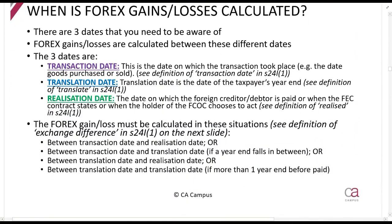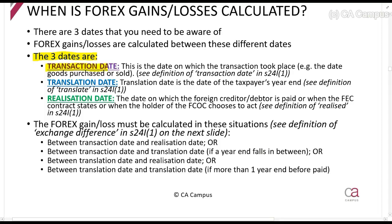Now, when do we calculate these forex gains and losses? There are three very important dates you need to identify in any question, and if you cannot identify these dates, you cannot do the forex gains and losses. The first is the transaction date — this is the date on which the transaction took place, when the risks and rewards of ownership pass, as defined under 'transaction date' in Section 24i(1).